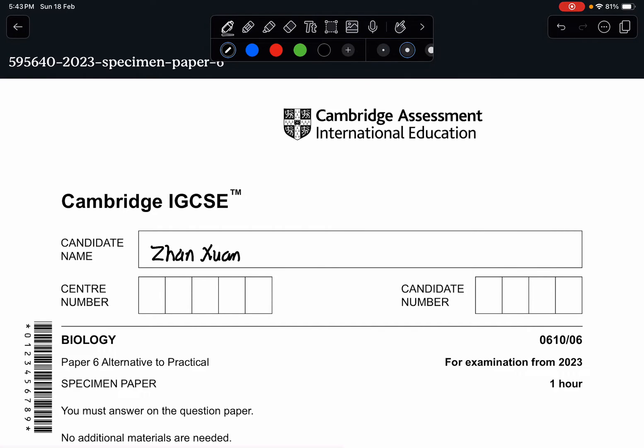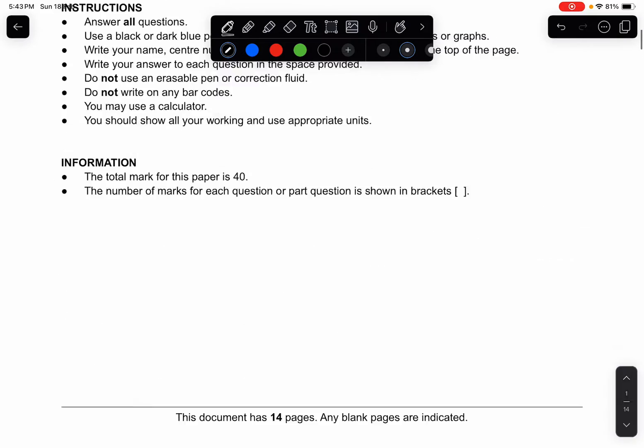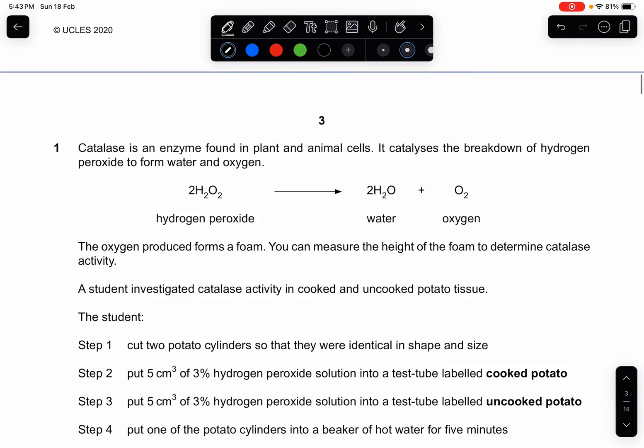Hey guys, welcome back to a new video by Biology with Junction. So today we are doing the last paper of the specimen series, which is the Cambridge IGCSE Biology Paper 6, Alternative to Practical for Examination from 2023. If there are any questions, please drop them down in the comment section. I will try to rectify as soon as possible. Let's start it.